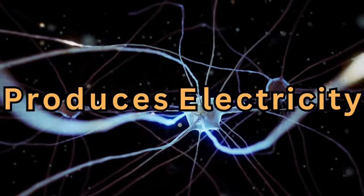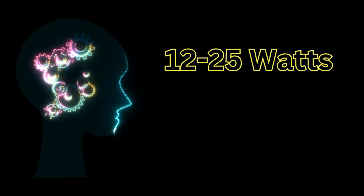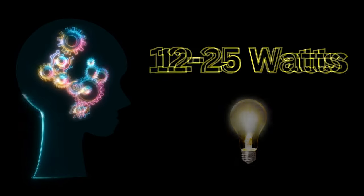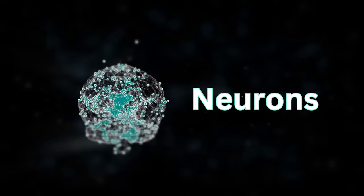But did you know that your brain also produces electricity? In fact, the average human brain produces about 12 to 25 watts of power, which is enough to power a small light bulb. This electricity is produced by the neurons in your brain.